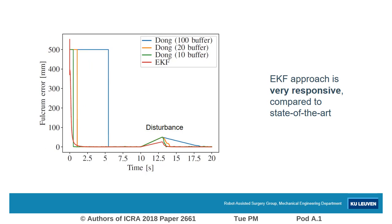Then, in this graph, we can see the evolution of the fulcrum error as a function of time. It is clear that the proposed method, again the red line, converges very quickly and that it rejects disturbances better than the state of the art.